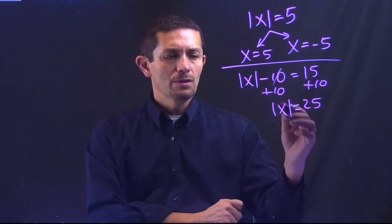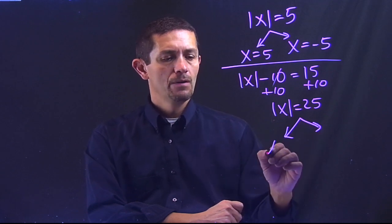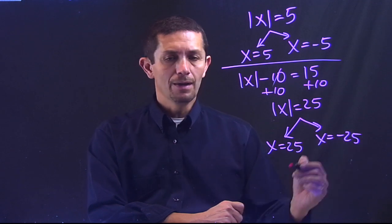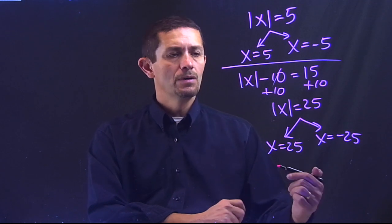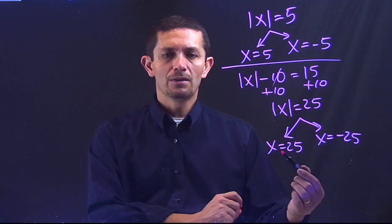Negative 10 plus 10 will cancel out, and I'll have absolute value of x equals to 25. At this point, because the absolute value is by itself, then I have my two different answers. One positive and one negative. The main idea: the absolute value has to be by itself, and at that point, you break it into two different answers.